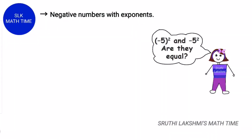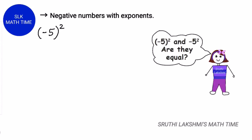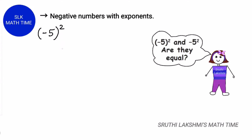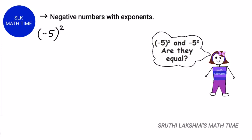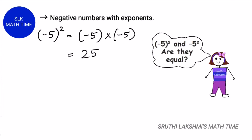Always be careful when calculating negative numbers with exponents. Negative 5 the whole square and negative 5 square are not equal. Always look at what is next to the exponent. Here the parenthesis is next to the exponent, so we raise everything inside the parenthesis to the second power. Negative 5 is inside the parenthesis, so it's negative 5 into negative 5, and negative times negative is positive, giving us 25.